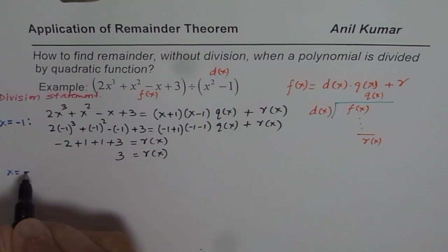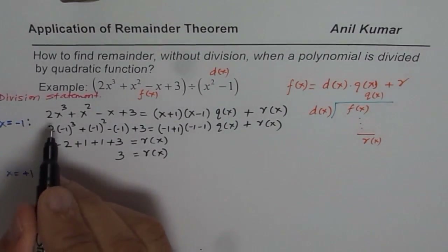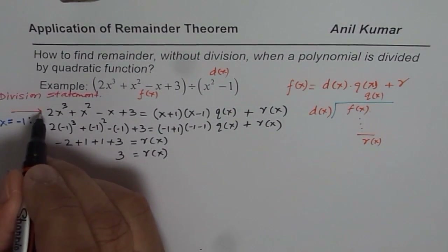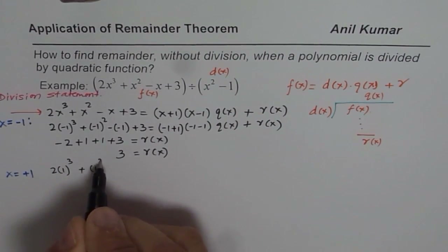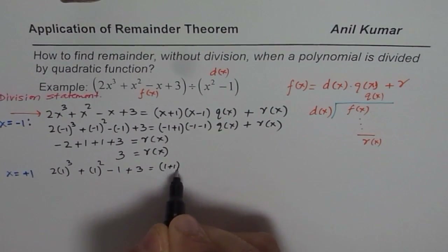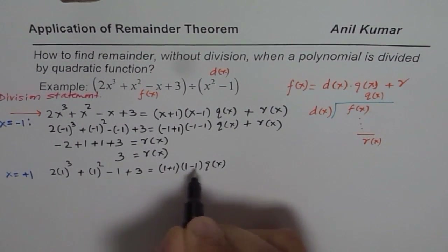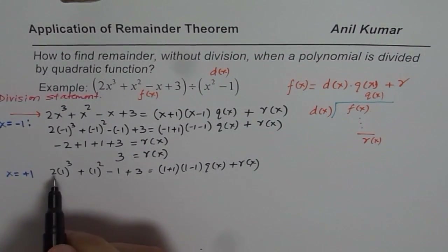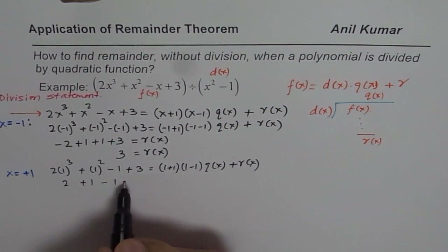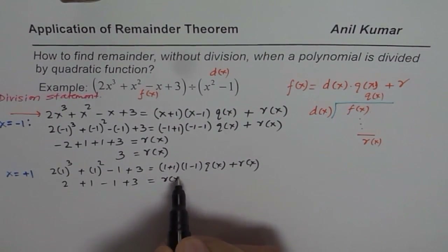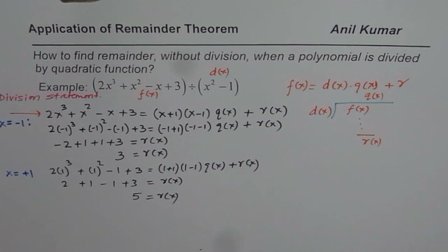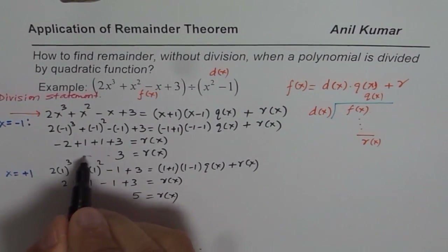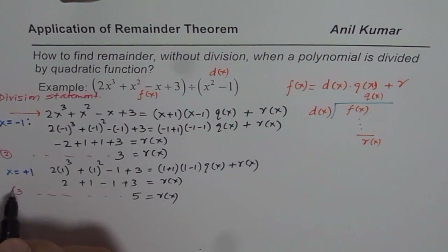Now let us substitute x = +1. We get 2(1)³ + (1)² - 1 + 3 equals (1 + 1)(1 - 1)·q(x) + r(x). Since (1 - 1) = 0, this becomes 0, so we get r(x) on the right. On the left: 2 + 1 - 1 + 3 = 5. So r(1) = 5. That is equation 2 and equation 3.